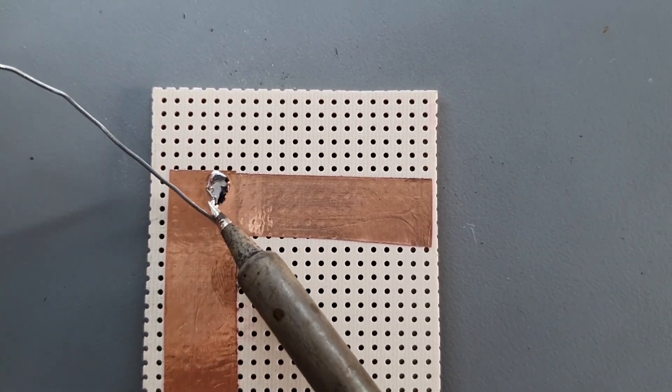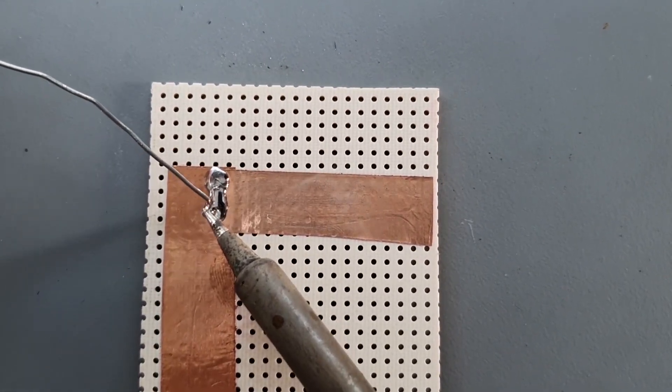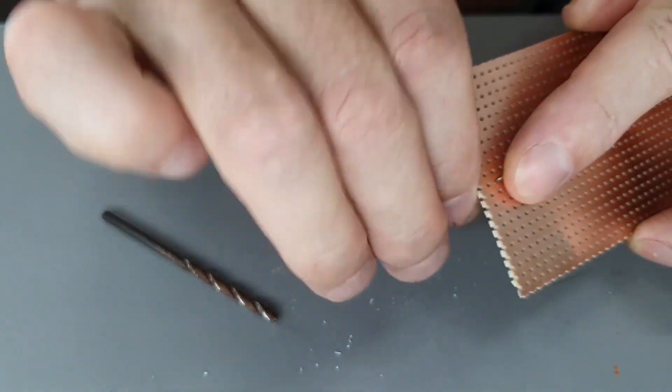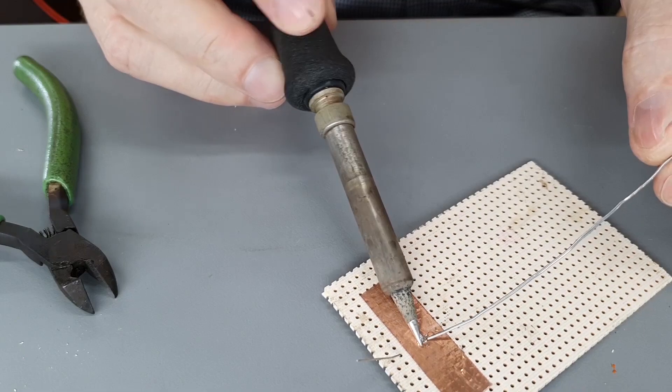Be careful not to overheat the tape as the adhesive melts at low temperature. Pierce the foil from the copper side before you try to insert a part lead or pin, then solder them in place.